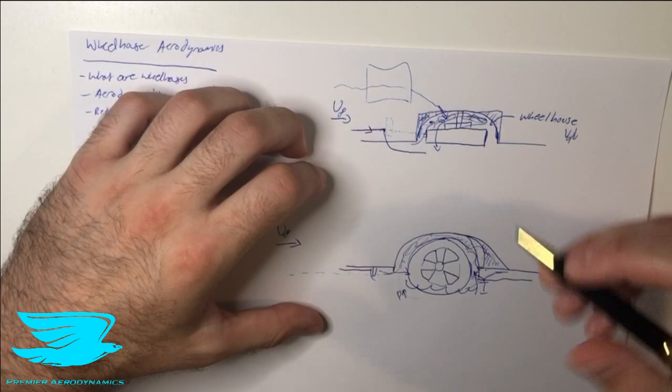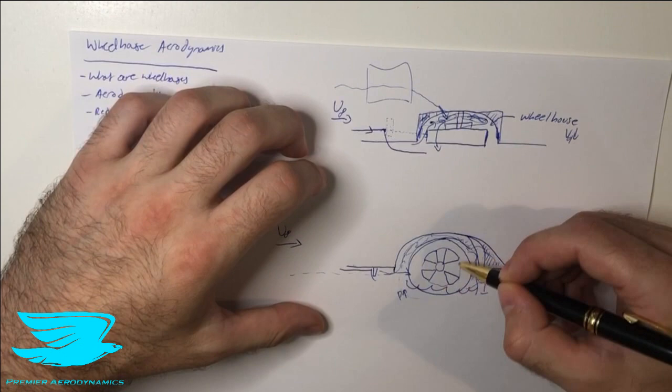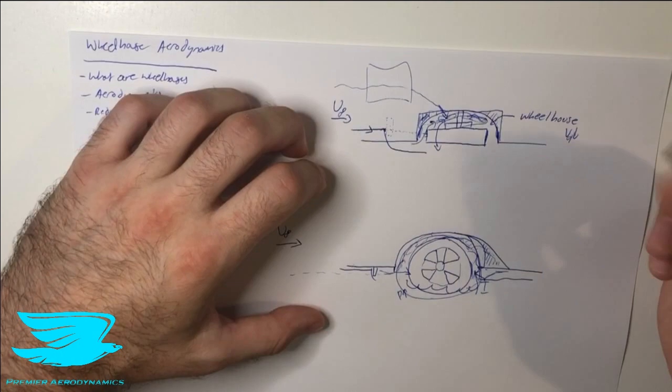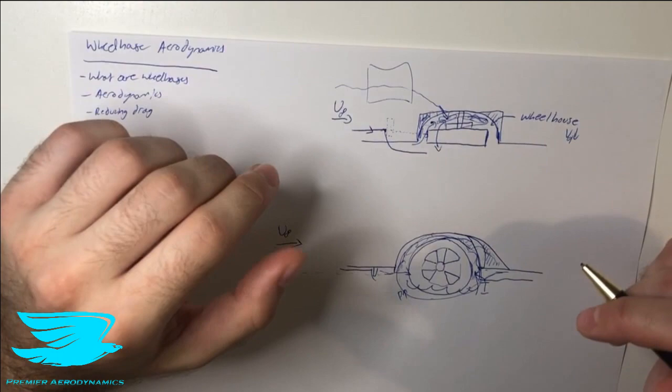Another thing we can do is, in addition to reducing the wheelhouse size, we can also increase the rim size and or the tire size to take up more of this wheelhouse volume. Now, obviously, that gets to a point where we can't go any bigger, otherwise we can't rotate the wheel around as much, but there's a limit to that.